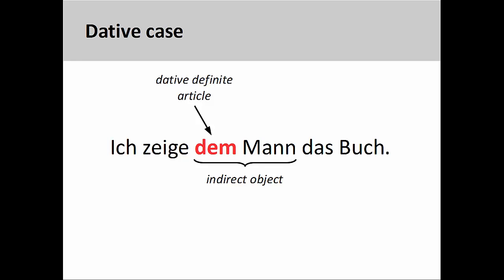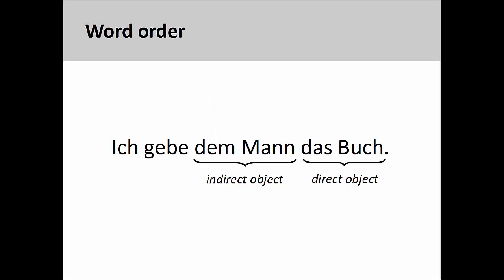Another example: 'Ich zeige dem Mann das Buch' — I show the book to the man. There are a few rules governing word order or syntax when you have both a direct and indirect object in a sentence. For the time being, it is important to know that if both objects are preceded by a definite article, the indirect object comes first. We'll cover these rules in more detail in a later presentation.